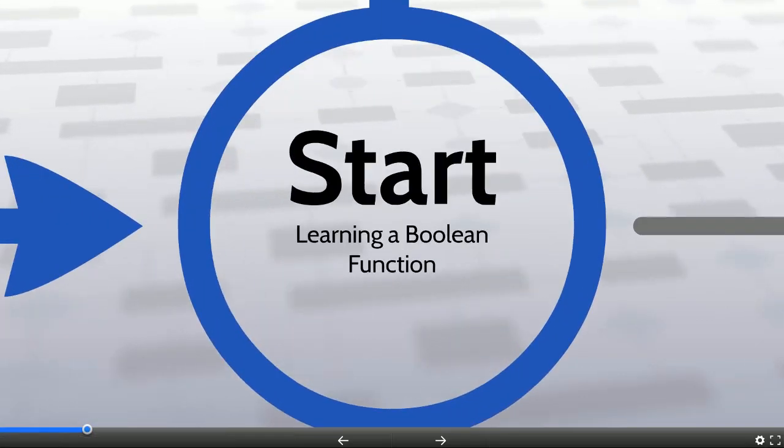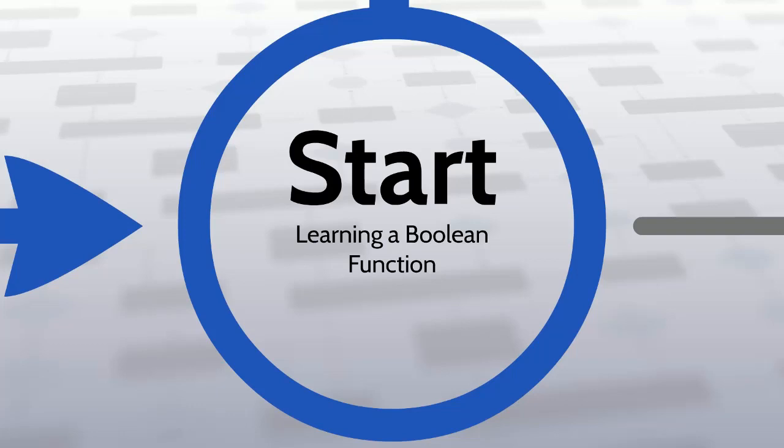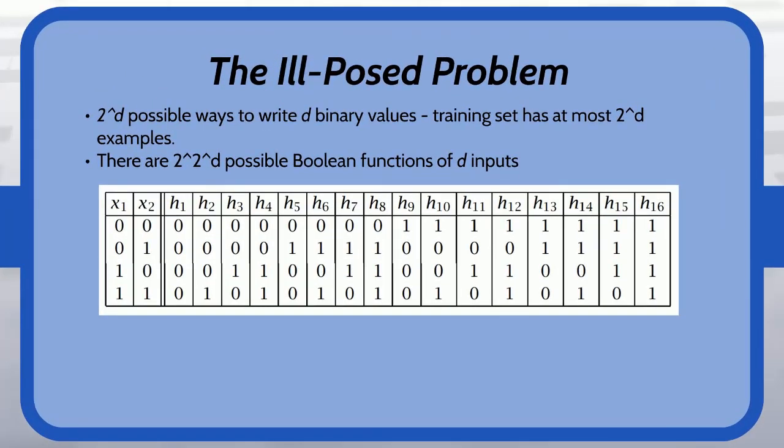So to start we are just going to use a simple boolean function example. We're going to try to learn a boolean function from a set of data endpoints and this is going to help expose a couple of the different problems and concerns that we should have when trying to make a pick between different models. So here's our example scenario. We have boolean inputs and boolean outputs, 0 or 1, yes or no.